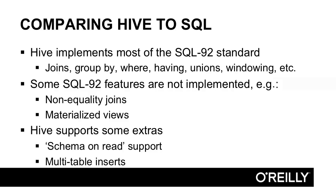Some features are different in Hive compared to SQL 92, because of the way the data is divided or because of the way Hadoop is designed. For example, non-equality joins are not supported because they cannot be expressed as a MapReduce job. The SQL update clause has limited use in Hive because of the way Hadoop works. HDFS does not support modifying a file in place. Additionally, transactions and materialized views are not supported in Hive.